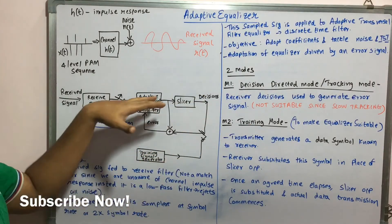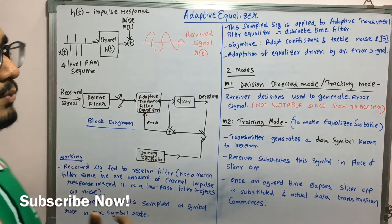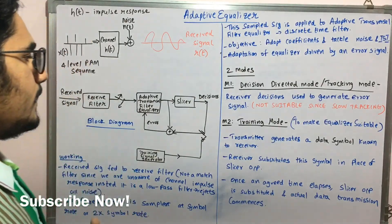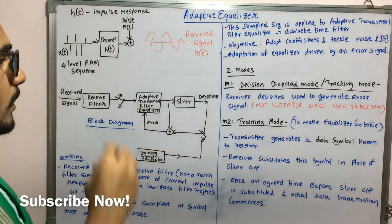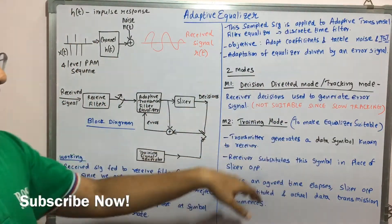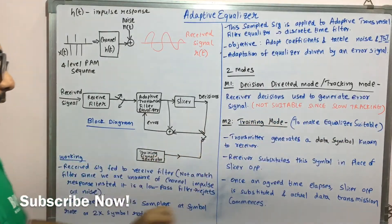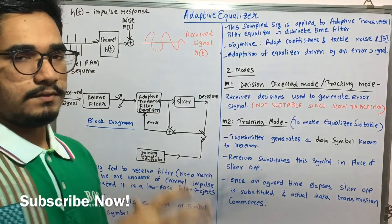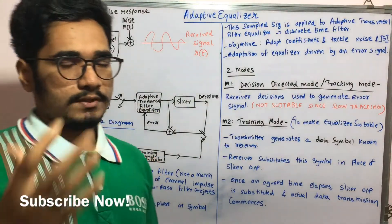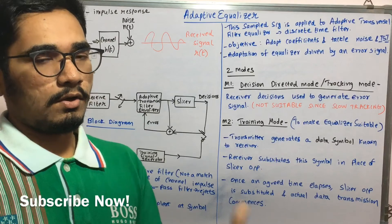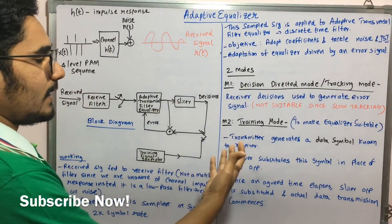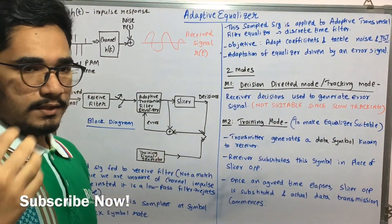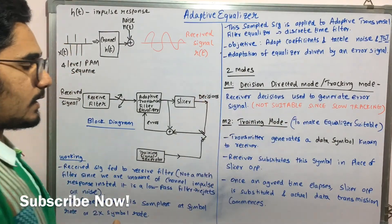So the receiver then substitutes this symbol in place of the slicer output. So here when you surpass the slicer, you will have a signal which will contain all the outliers eliminated. So that will be a certain kind of signal, which will be replaced by this data symbol known between the receiver and the transmitter. Now once they agree upon a certain time, the receiver and transmitter will agree after so much time, we need to replace the original signal or put back the data signal. So once an agreed time elapses, the slicer output is then substituted back and the actual data transmission commences.